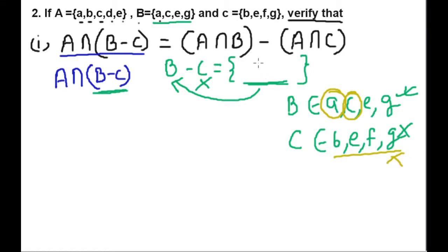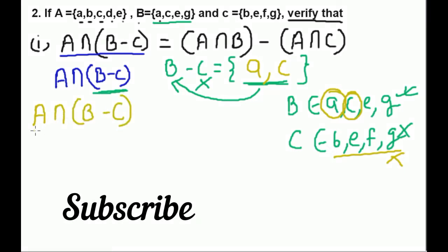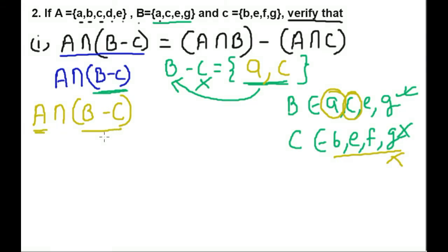So B minus C equals {A, C}. Now A intersection (B minus C) means the common elements between Set A and the set (B minus C). The elements of (B minus C) are A and C, so we find the intersection with Set A.